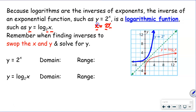If you look at the graph, notice the domain: this graph keeps going left and right, so the domain is all real numbers. Whereas our range — all values are y greater than 0, because the y-axis is our asymptote, so the function is always above that when we have a function like 2 to the x power.